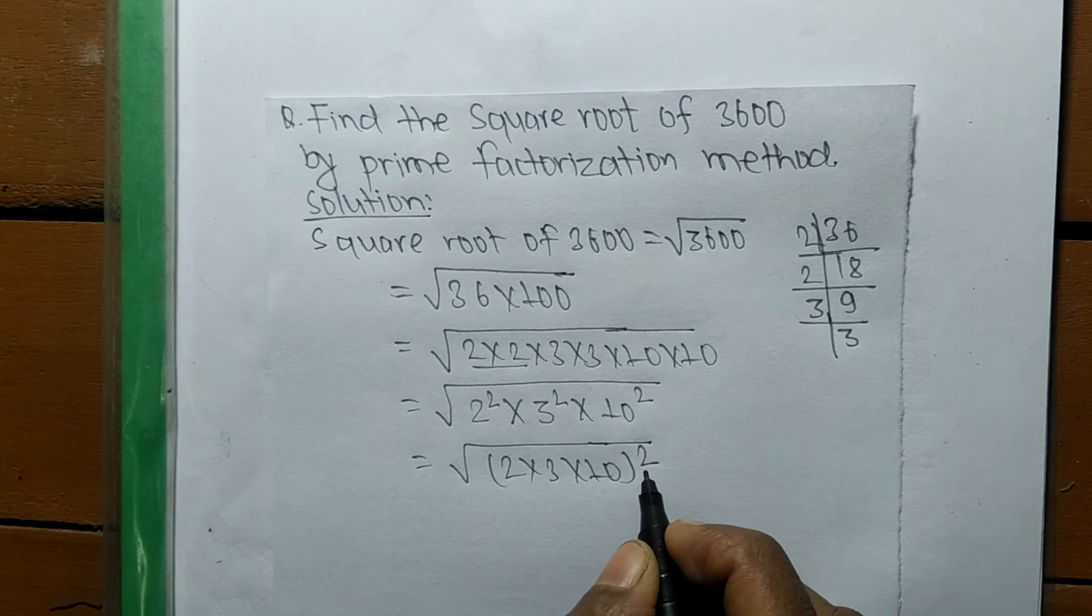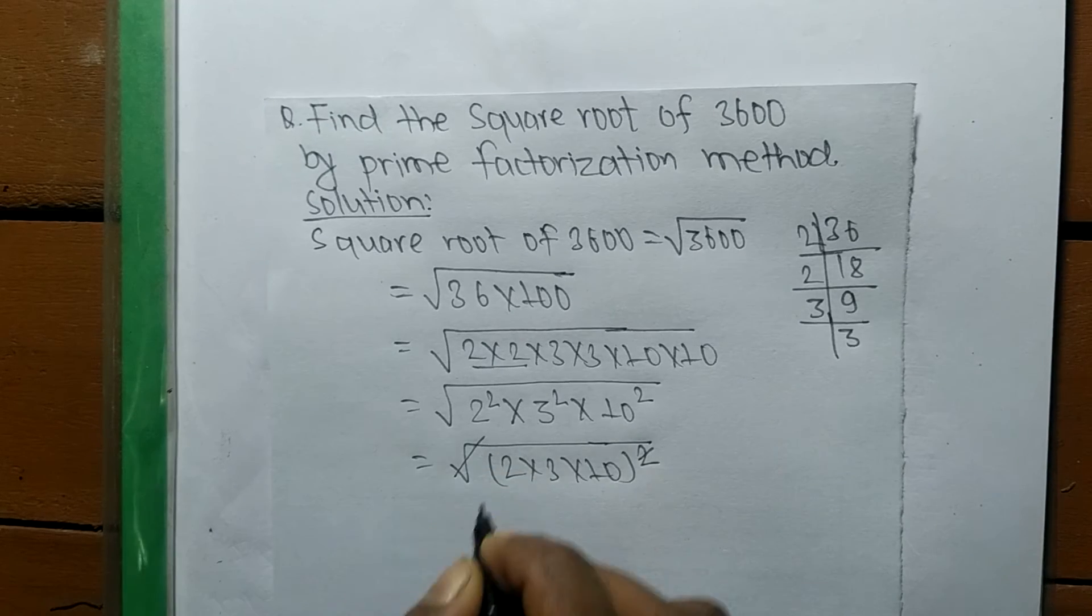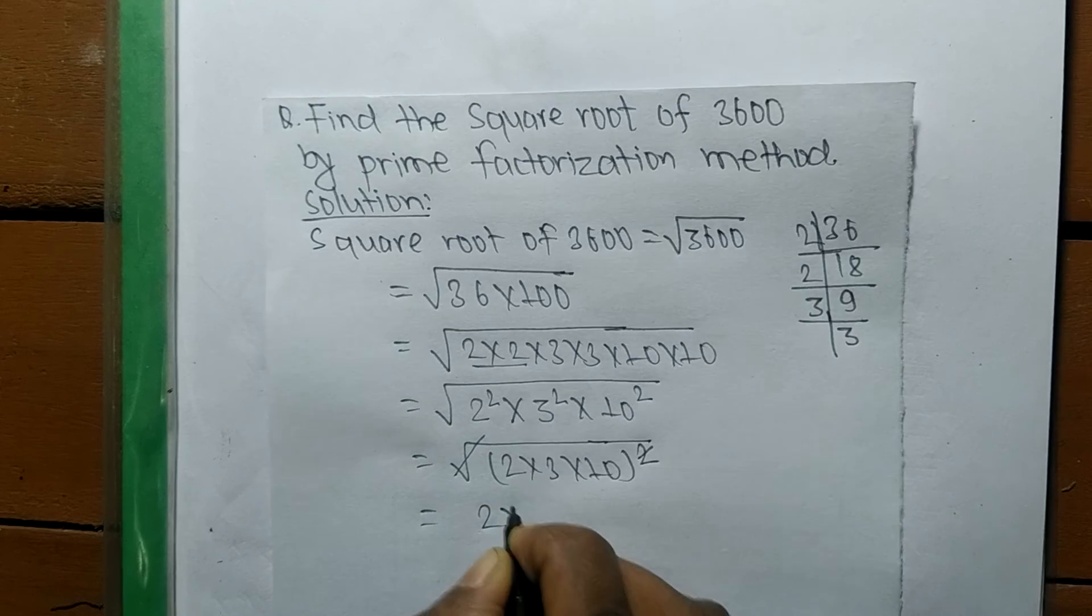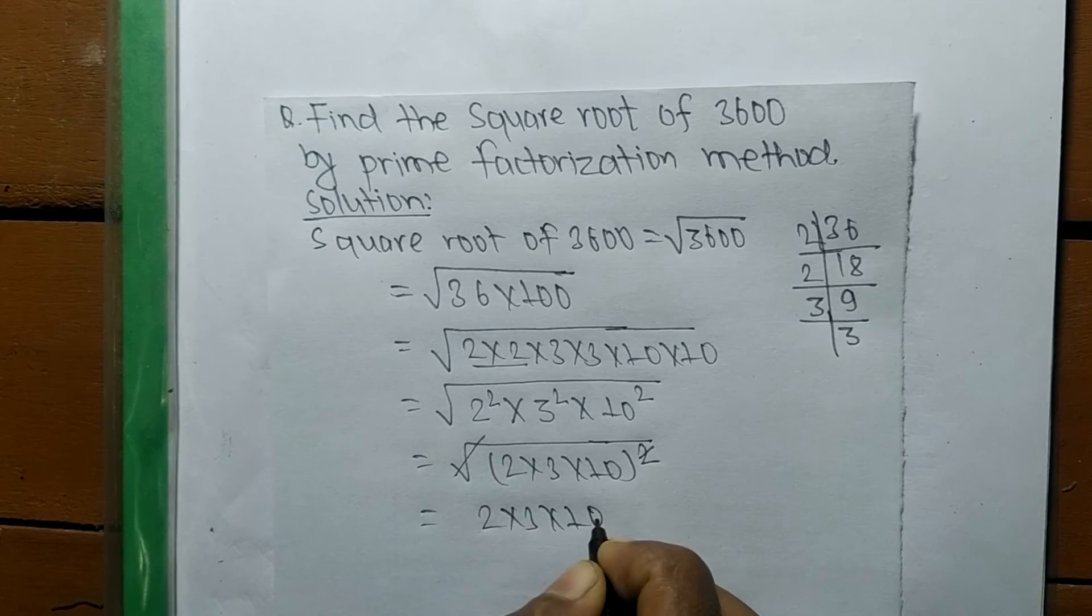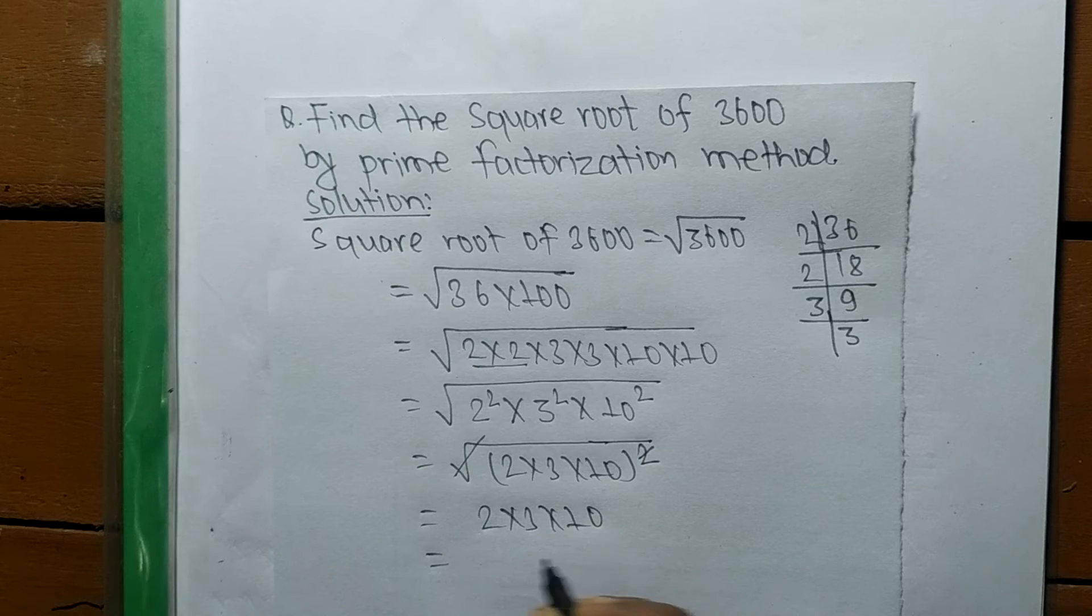All the numbers contain a square, so we have taken square as a common factor. A square and a square root cancel each other, so 2 into 3 into 10 is the remaining part.